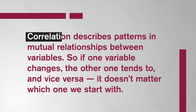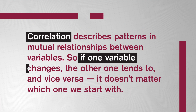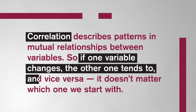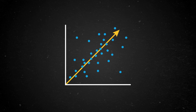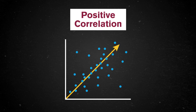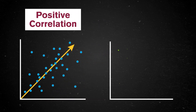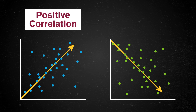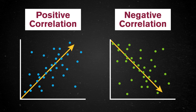The misconception that seems to get talked about the most is the difference between correlation and causation. Correlation describes patterns in mutual relationships between variables. So if one variable changes, the other one tends to, and vice versa. It doesn't matter which one we start with. Usually we focus on two types of correlations. If large values of one variable tend to show up with large values of a second variable, we say they have a positive correlation. But if large values of one variable tend to go with small values of a second variable, we say they have a negative correlation.